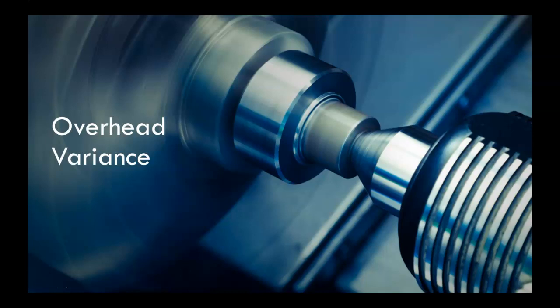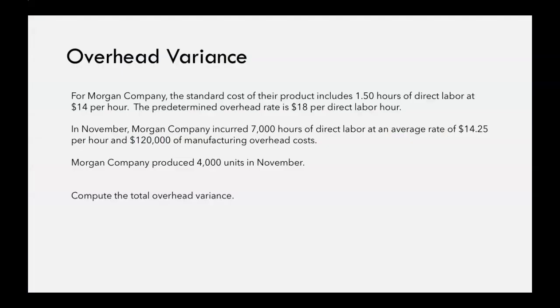Let's work on an overhead variance example problem. For Morgan Company, the standard cost of their product includes 1.5 hours of direct labor at $14 per hour. The predetermined overhead rate is $18 per direct labor hour.